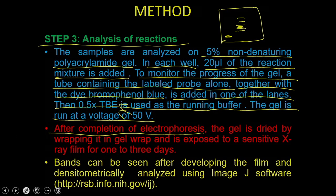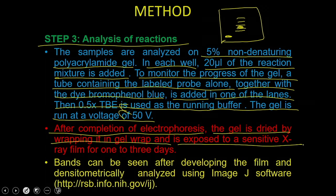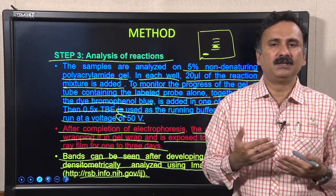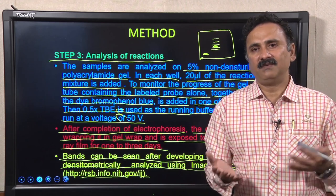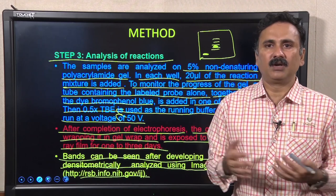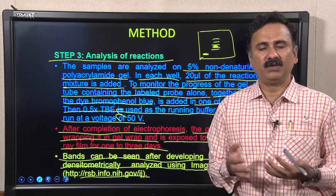After electrophoresis, the gel is dried by wrapping it in gel wrap and exposed to a sensitive X-ray film for 1 to 3 days. Bands are visualized after developing the film and can be densitometrically analyzed using image analysis software such as ImageJ or other commercial software.